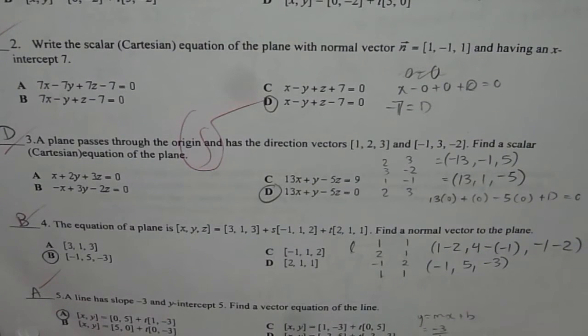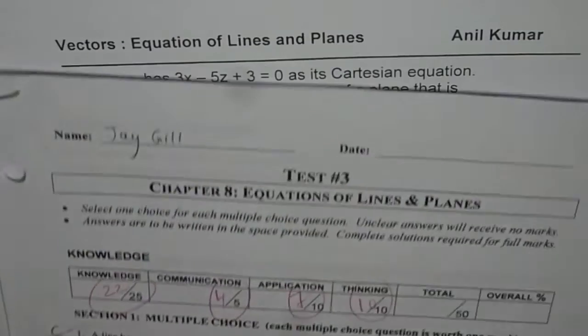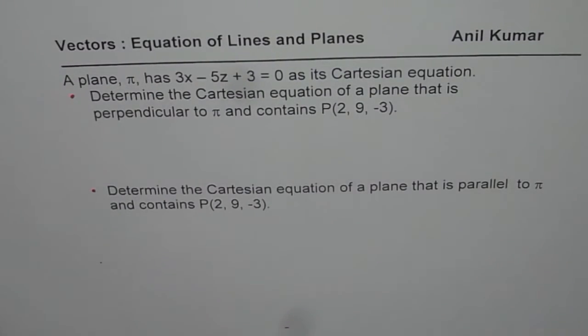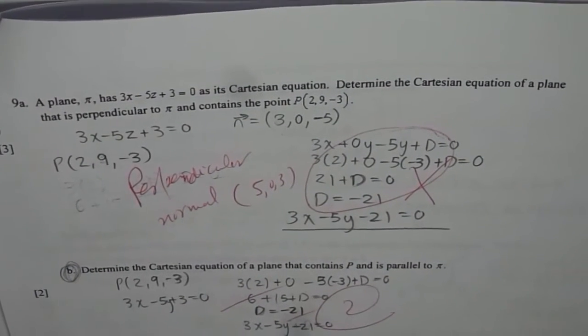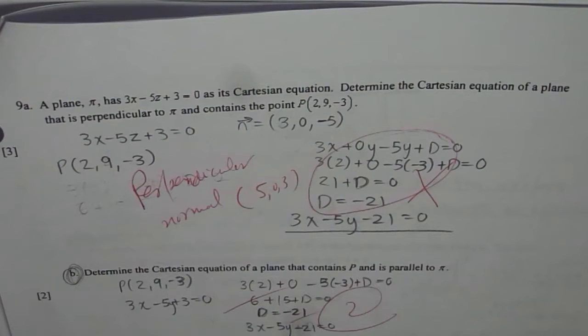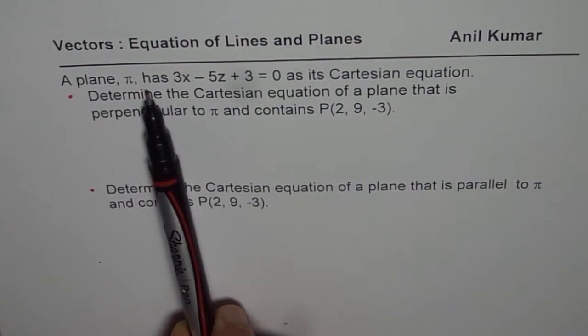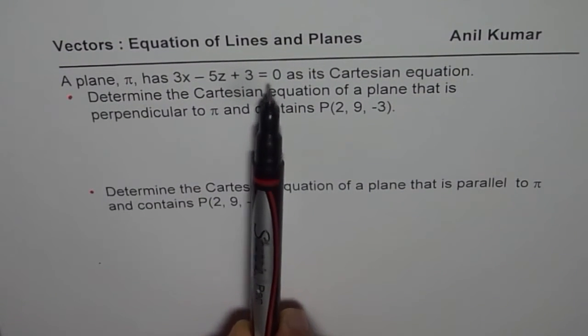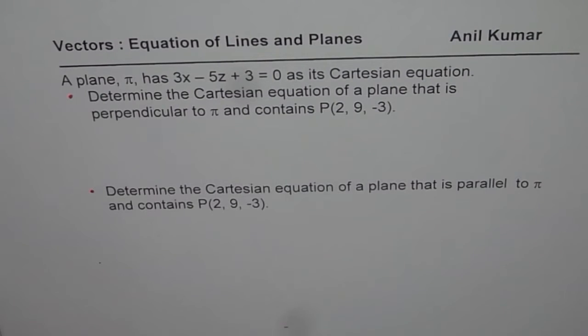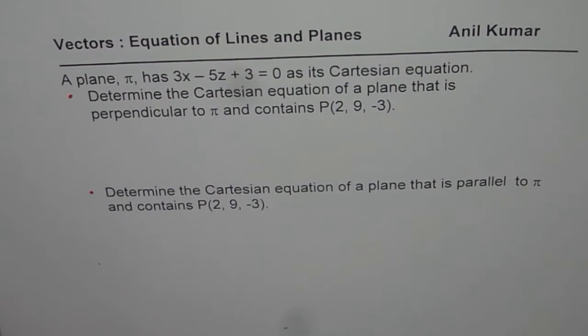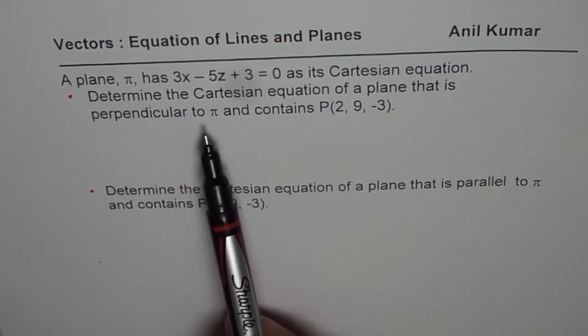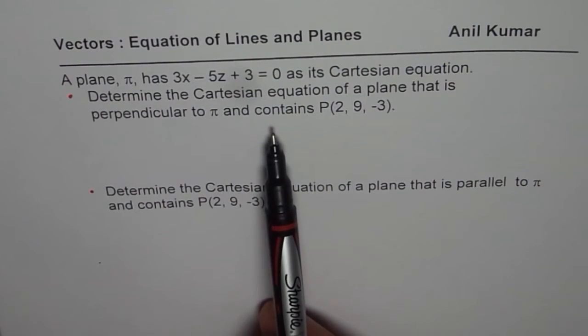So there are more questions, but there is one which I want to discuss with you. Here it is. So the question which I want to discuss with you is question number 9. A plane pi, let's look into this question in further details. It says a plane pi has 3x minus 5z plus 3 equals to 0 as its Cartesian equation. Determine the Cartesian equation of a plane that is perpendicular to pi and contains this point.